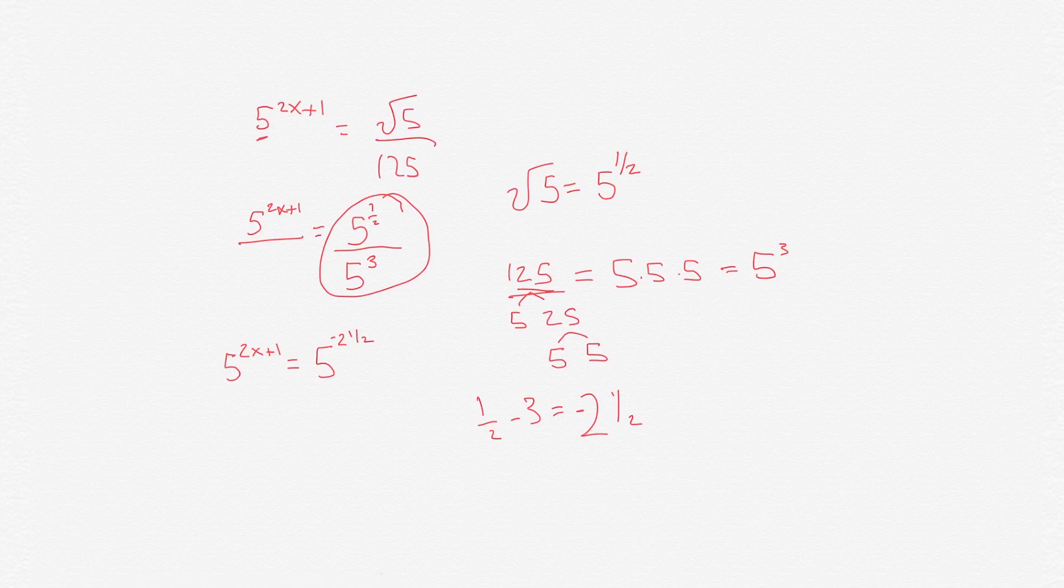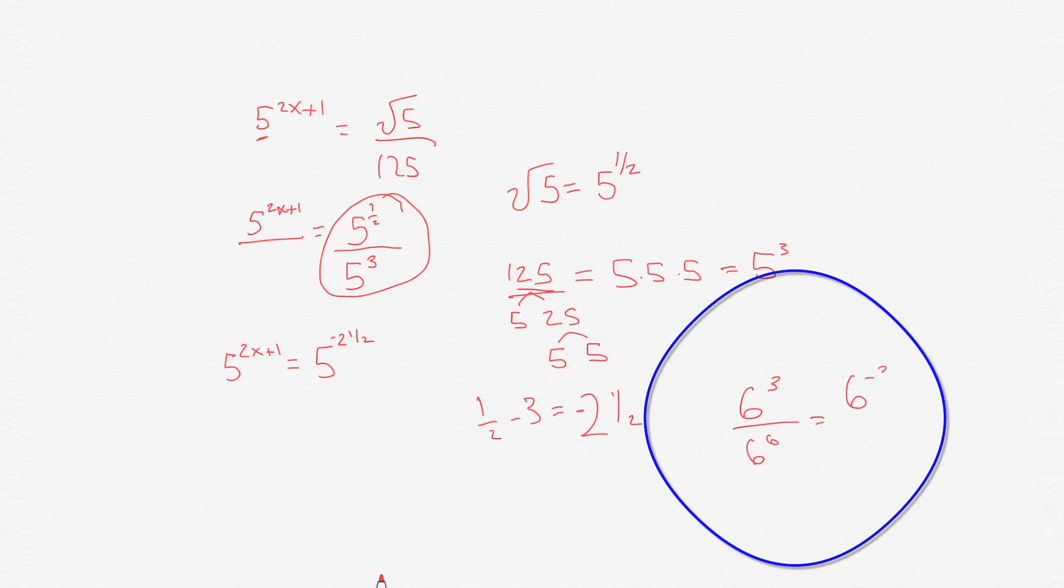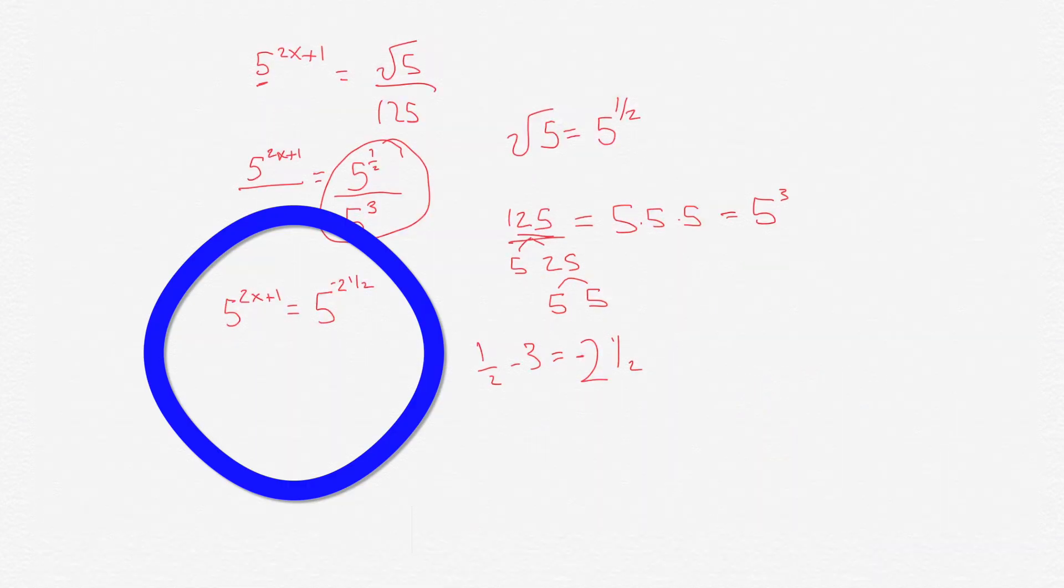Just to help you out, if we had 6 cubed over 6 to the 6th, that would be 3 minus 6, that would be 6 to the negative 3. So now we go back to our equation.